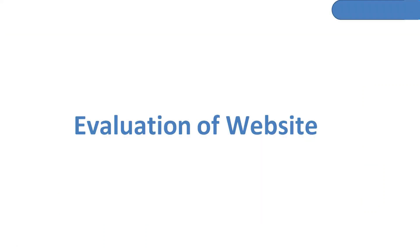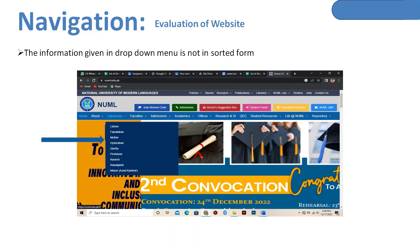Now let's go to the evaluation of the website. In the evaluation, we have basically four points to discuss one by one. First of all, we look at navigation. Navigation is basically the navigation bar — your movement within the website, how you need data, how you need menus, how you need buttons. The information given in the dropdown menu is not in sorted form. If you click on the campus, a dropdown menu opens with different cities showing the number of universities. This is not in sorted, ascending or descending order — it should be sorted.